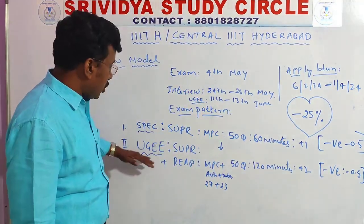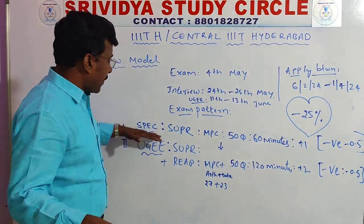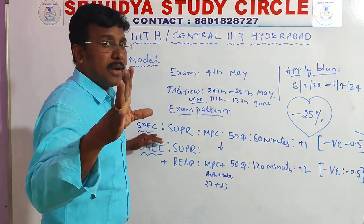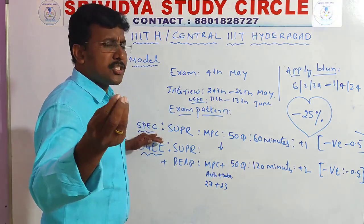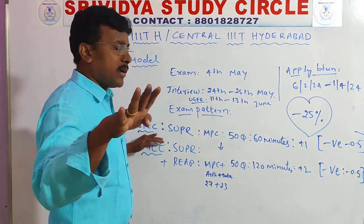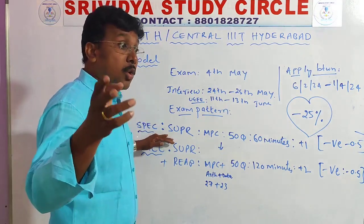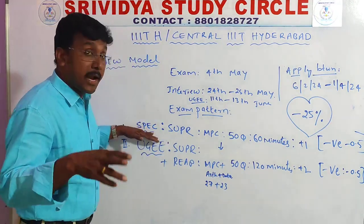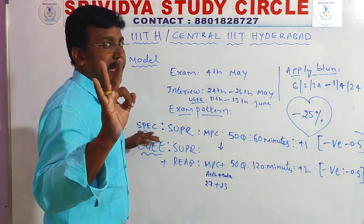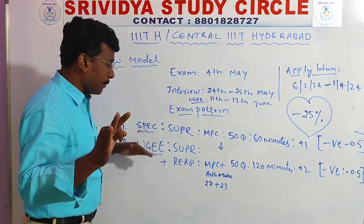SPEC and UGE are two ways to join Central Tribility. SPEC is for all five Tribilities — the five State Tribilities, that is Basara and four Andhra Tribilities. Nowday students can also write SPEC and Udon Goals. Those three categories only can write SPEC exam.